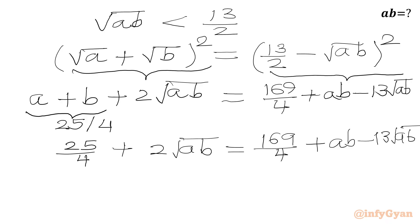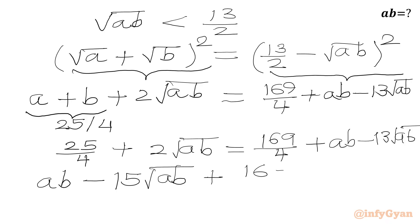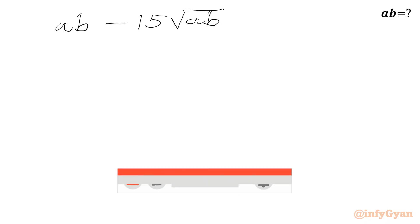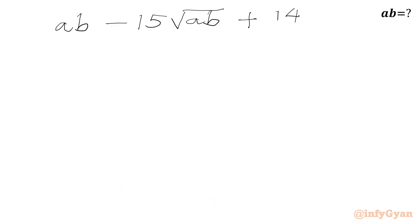Taking all terms to the right-hand side, we collect the √(ab) terms: −13 minus 2 gives −15√(ab). For the constants, 169 over 4 minus 25 over 4 gives 144 over 4. So we have ab minus 15√(ab) plus 144 over 4 equal to 0.